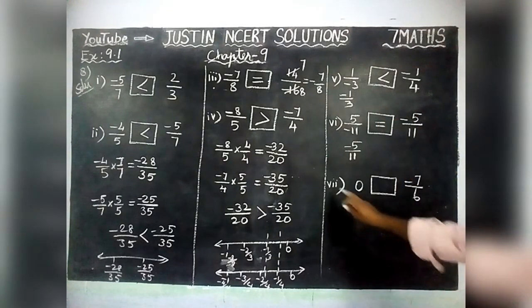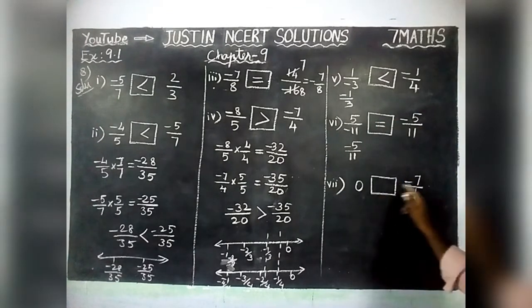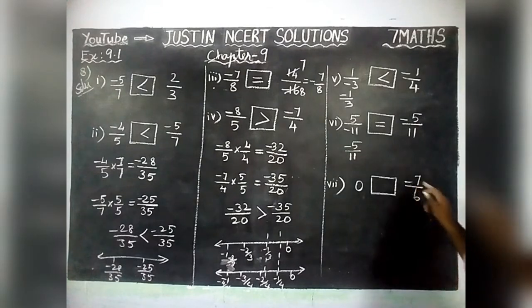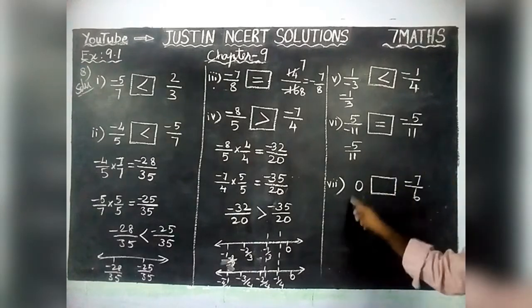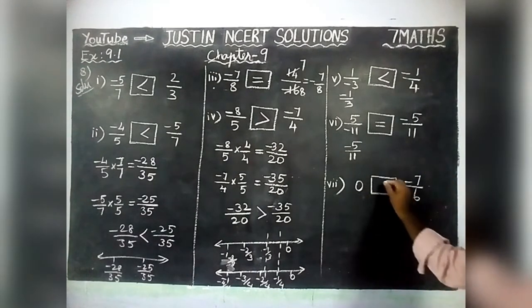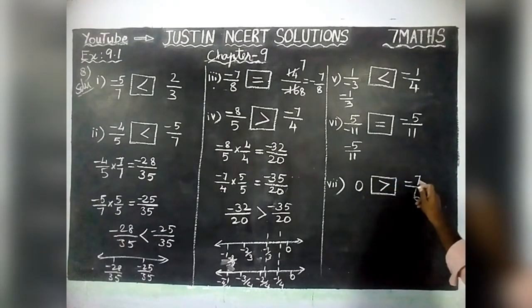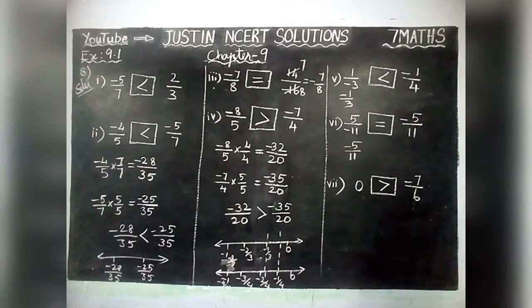Seventh question: 0 and minus 7 by 6. We don't have any doubt — this is a negative rational number and 0 is positive. So 0 is the greatest value. Therefore, 0 is greater than minus 7 by 6.